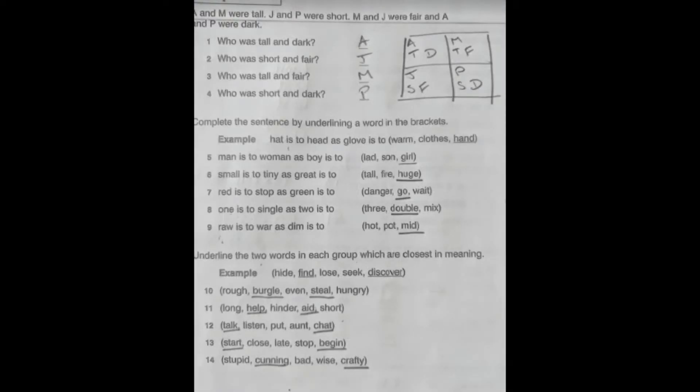So questions 1 to 4, hopefully you will have drawn a table like I've asked you to do and your table will look the same as mine. Then you will have found it really quick to fill in the answers. So who was tall and dark? A was tall and dark. Question 2, who was short and fair? J was short and fair.